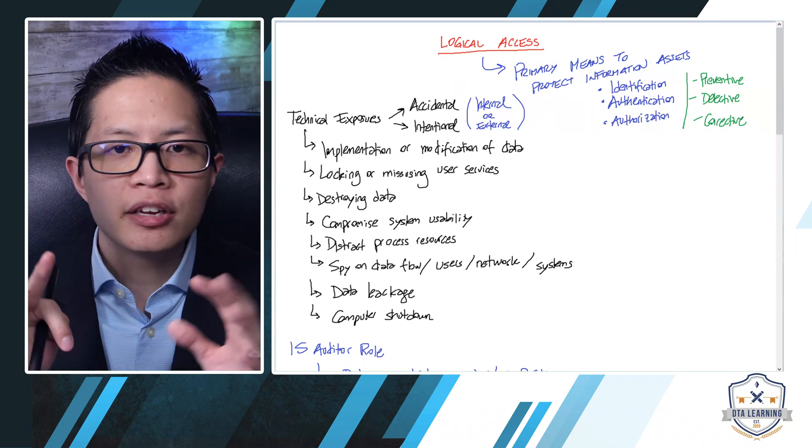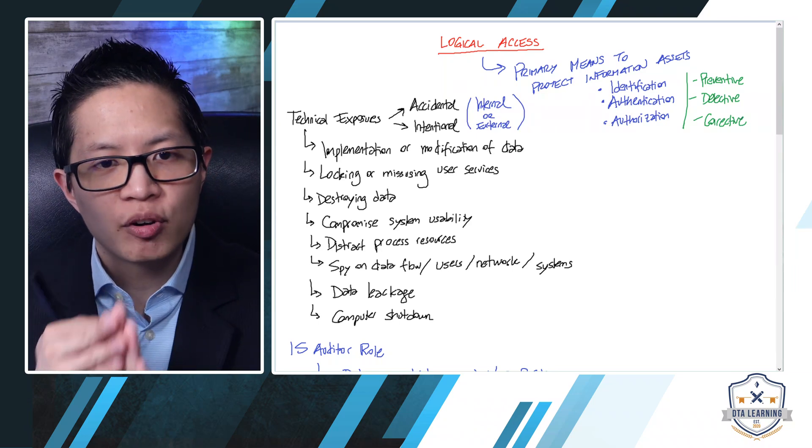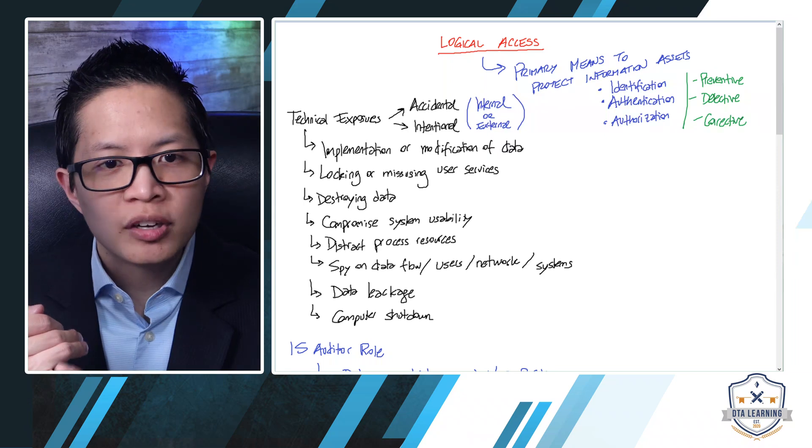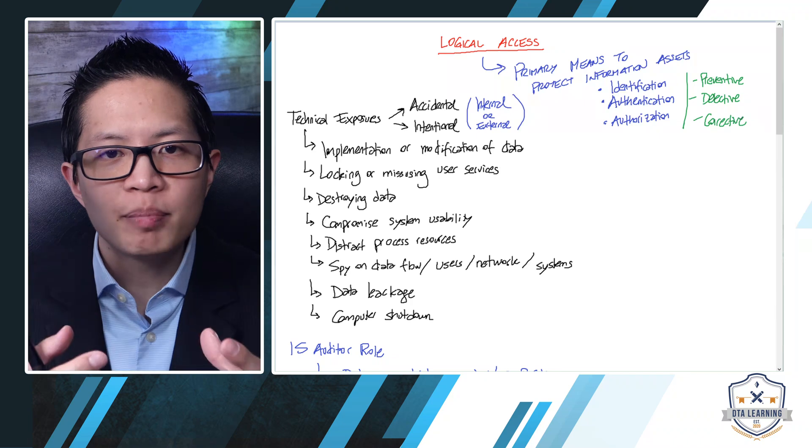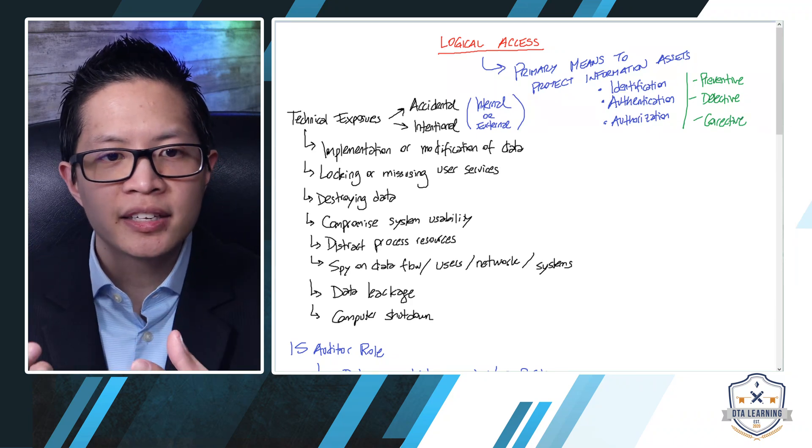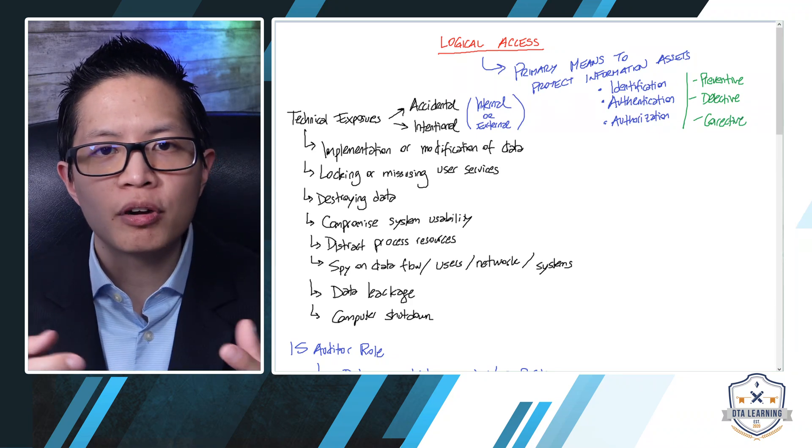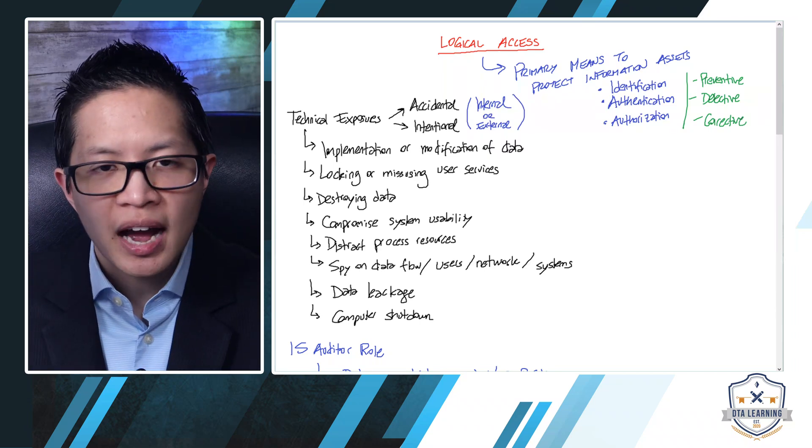Also, you have to remember that usually we have three different types of controls. We have preventive controls, detective controls, and corrective controls. All of these controls are going to help you protect those assets. But before you even try to put controls, you need to understand what those risks are.